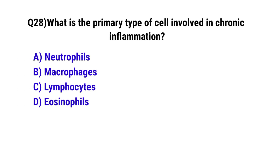Question number 28. What is the primary type of cell involved in chronic inflammation? The correct option is B. Macrophages.